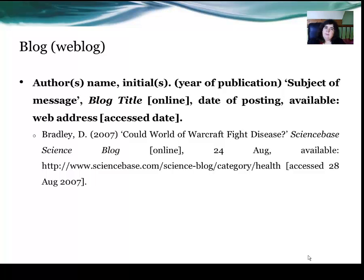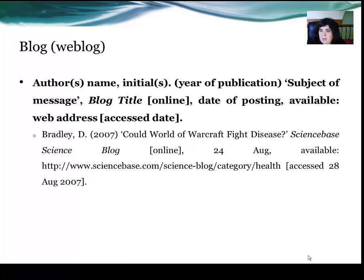For a blog or web log, you have the author's surname, comma, initial D., year of publication 2007. The subject of the message — 'Could World of Warcraft fight disease?' — in inverted commas with the first word capitalised. Then the name of the blog, Science-based Science Blog, in italics and capitalised. In brackets, the word 'online', comma, the date of posting — 24th of August — comma, 'available' followed by the full HTTP web address, and then in brackets 'accessed 28 August 2007'.